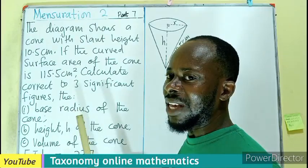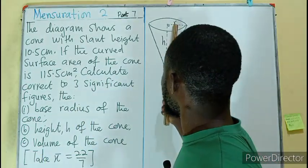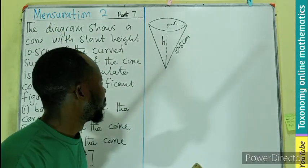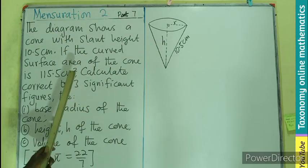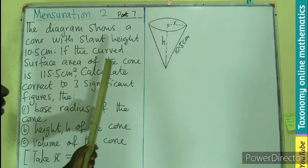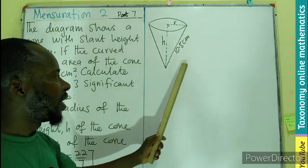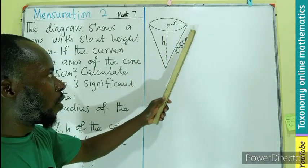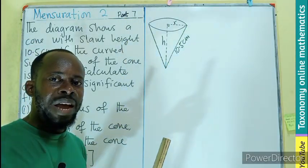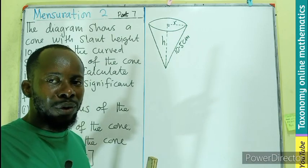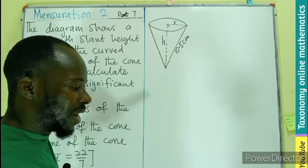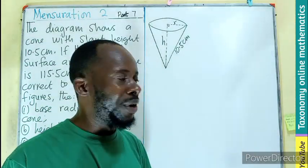Beginning with the first one, the base radius, which is this R here. We are looking for this R. So how do we find the R? From the beginning, we have been told the curved surface area. If the curved surface area is given to us, the formula that will be used to find the curved surface area contains a radius. The calculation gives us 115.5, therefore the formula can be used to get the radius.